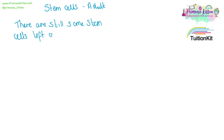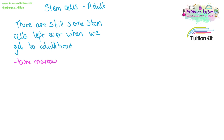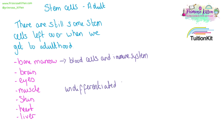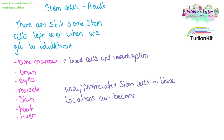There are still some stem cells left over when we get to adulthood. For example, the stem cells that are in bone marrow can go on to differentiate to become blood cells or cells from the immune system. There are also stem cells found in the brain, in eyes, in muscles, in skin, in the heart, or in the liver. These undifferentiated stem cells can only differentiate to become related differentiated cells.